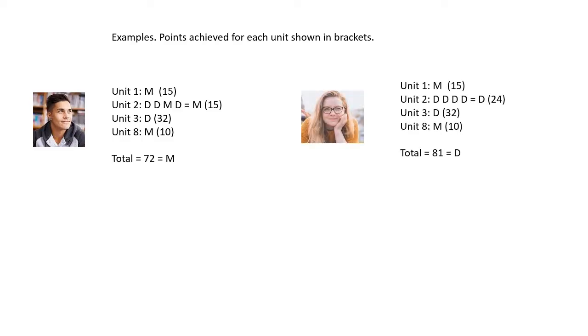Here's another example. This young lady here. Unit one, she got a merit. 15. Unit two, D, D, D, D, which is a D distinction. 24. Unit three, distinction. 32 points. Unit eight, she got a merit. 10 points. Add them up. 81. She gets a distinction. Well done. Off to do nursing, I think, now.